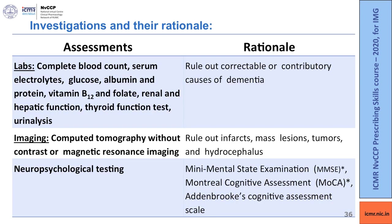When evaluating patients with dementia, determine whether there are reversible or irreversible causes. Lab investigations include complete blood counts, serum electrolytes, blood glucose, albumin and serum proteins, vitamin B12 and folate levels, renal and hepatic function, thyroid function test, and urine analysis.